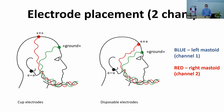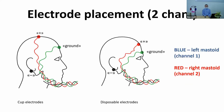For two-channel recording, color notation is used: blue corresponds to the left ear and left mastoid, red to the right mastoid or right ear. The left ear is connected to channel 1 and the right mastoid to channel 2. There are two types of electrode montage depending on whether cup electrodes or disposable electrodes are used. We will use disposable electrodes, so two electrodes will be on the forehead and two on the mastoids. Now I invite Maya, our audiologist, to perform the test.